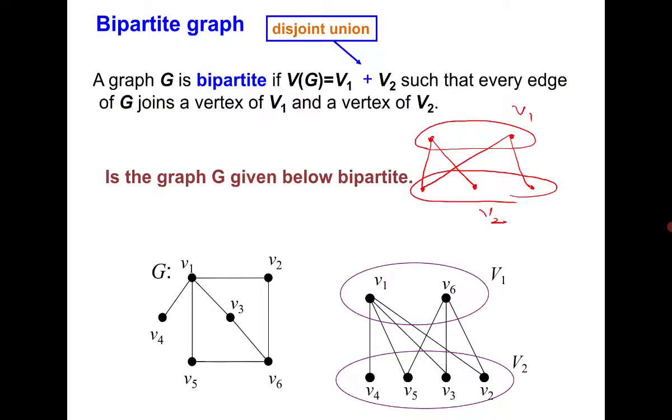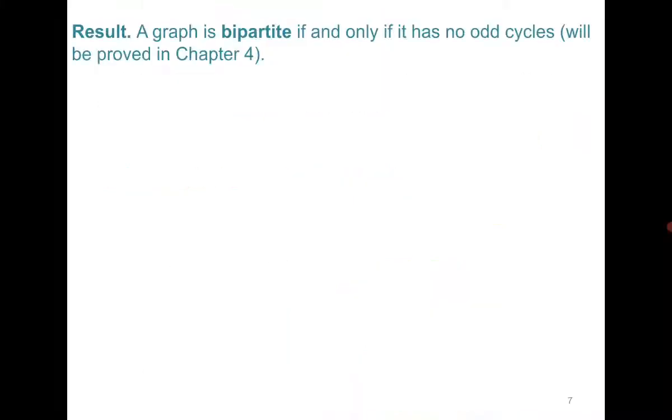But now if you apply this result here then you can see that there is a cycle of length 4, there is another cycle of length 4, even there is an outer cycle of length 4, but there is no cycle of length 3, 5 or any odd cycle and therefore using the result we can say that the graph is bipartite. If it has an odd cycle we will say the graph is not bipartite.